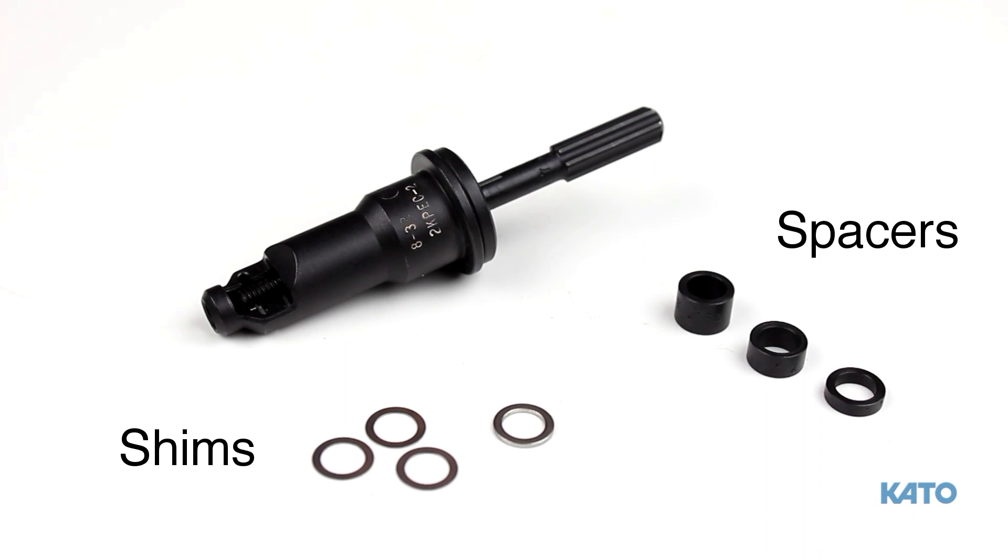The spacers and shims control how far out the prewinder body the mandrel will travel. Using one of the spacers and one more shim will allow you to fine-tune the depth adjustment for your particular application.